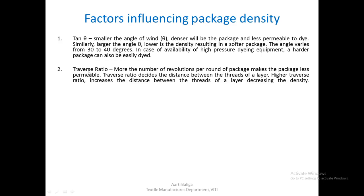The next factor influencing package density is the traverse ratio. More the number of revolutions per round of package, the less permeable the package becomes — that means the package becomes harder and less permeable. Traverse ratio decides the distance between the threads of any particular layer. Higher traverse ratio increases the distance between the threads of a layer, decreasing the density. So increasing the distance between the coils being laid leads to a decrease in density.